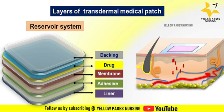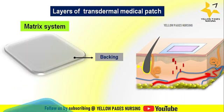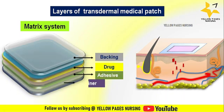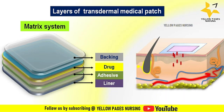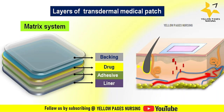Next is the matrix system, composed of backing, drug, adhesive, and liner. The drug is evenly spread throughout the patch material and diffuses directly from the patch into the skin. This system is useful for delivering drugs that do not require strict control over drug release.